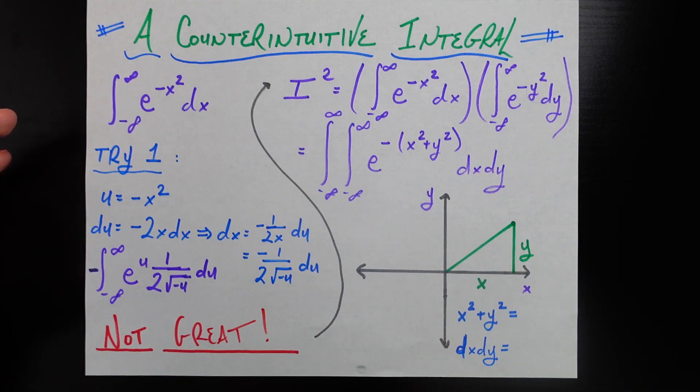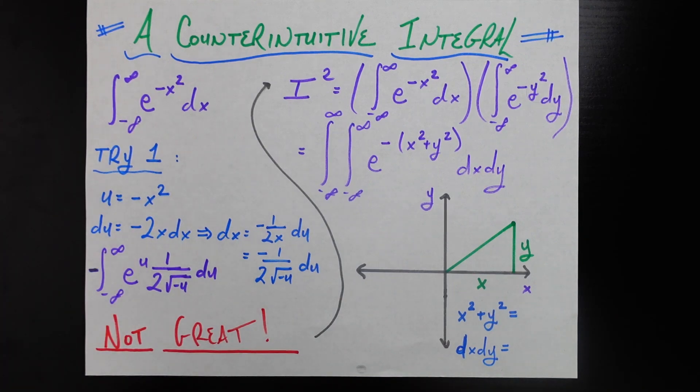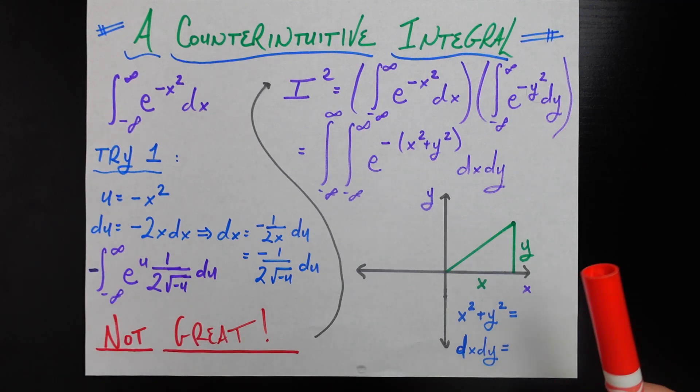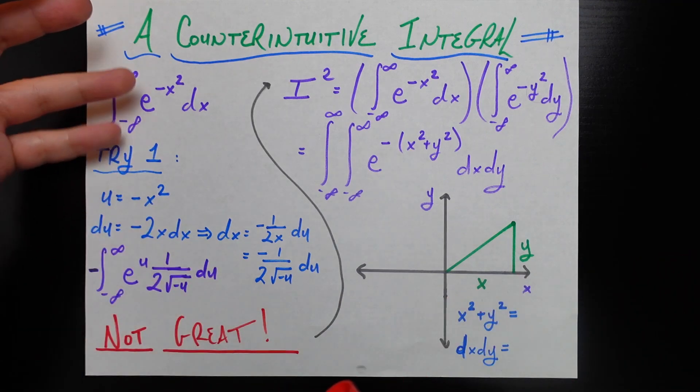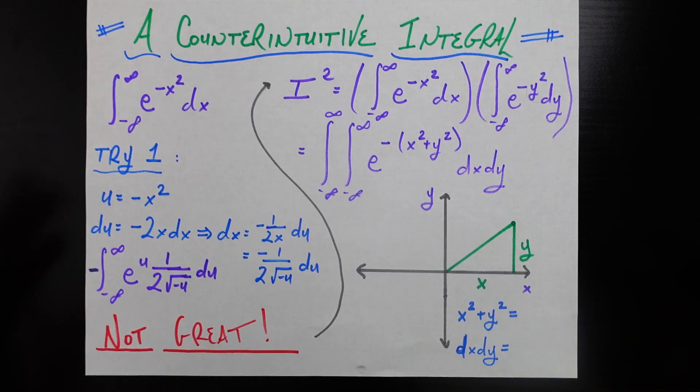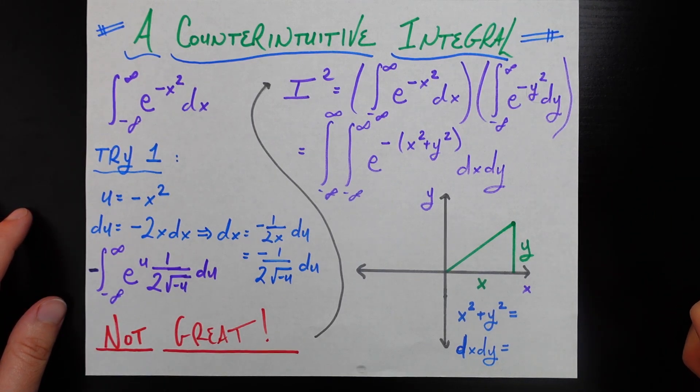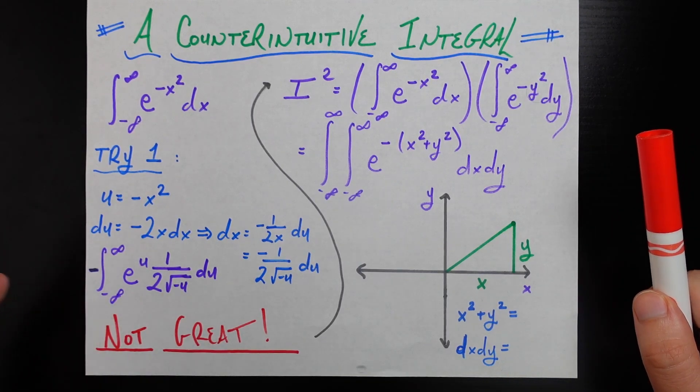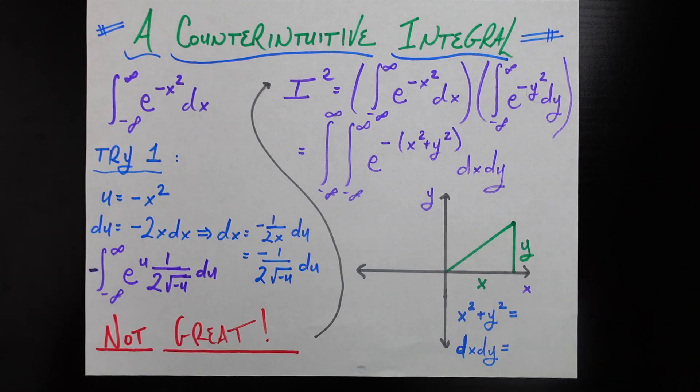Any of the major techniques don't really seem to lead you anywhere. What does work is a very counterintuitive thing. I couldn't find a way to motivate this based on the form of the integral. It really does seem to come out of nowhere, which goes against everything I teach about trying things based on evidence.